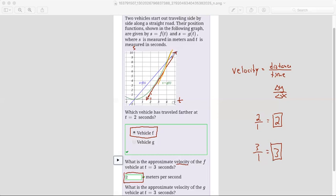So now the slope of this tangent line is bigger than the slope of the f line. So the vehicle that's traveling faster at t equals four would be vehicle g. And really, I think it already was at t equals three. It was already faster, even though it hadn't caught up with it yet.